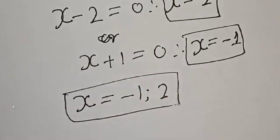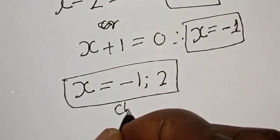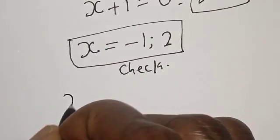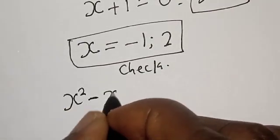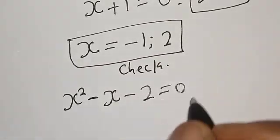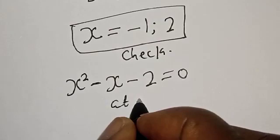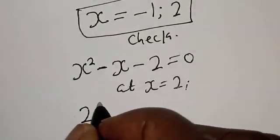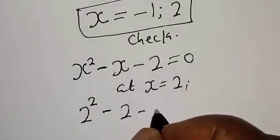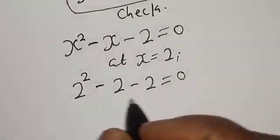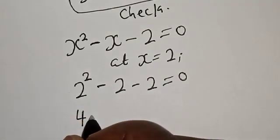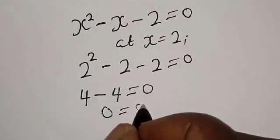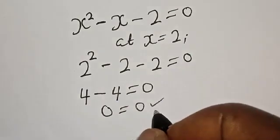Let's check to confirm if our answer is right. We have the given equation s squared minus s minus 2 is equal to 0. At s equals 2: 2 squared minus 2 minus 2 must equal 0. That gives 4 minus 2 minus 2, which is 4 minus 4, which equals 0. The left-hand side equals the right-hand side, satisfying the equation at s equals 2.